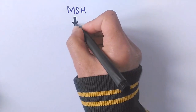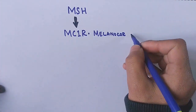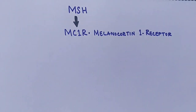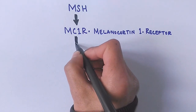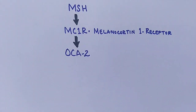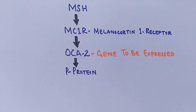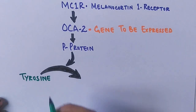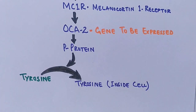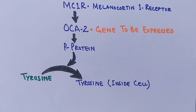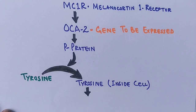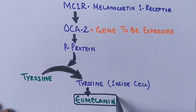Now let's see how pigmentation of the iris occurs. The MSH hormone — melanocyte stimulating hormone — is released by the pituitary gland and received by the MC1R receptor on melanocyte cells. This creates a signal cascade activating the OCA2 gene, which undergoes transcription to produce a P protein. This P protein is a membrane-bound transporter protein that transports tyrosine into the melanocyte, where it serves as a precursor for eumelanin.